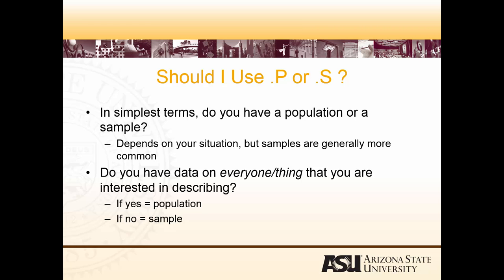Populations aren't always enormous — they can be very small. We could have a population that consists of everyone in our section of HCV and PDH 300. That's a population. But at the same time, that group of students in our class is a sample of ASU students. So we don't necessarily distinguish between the two just by which is bigger.